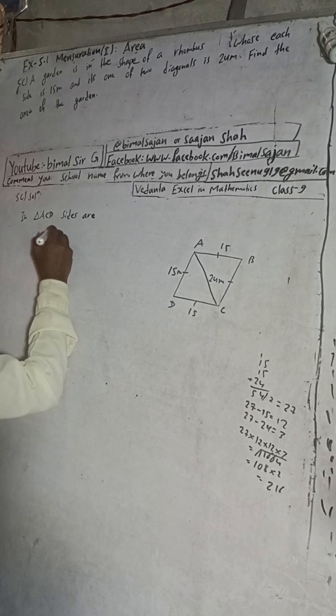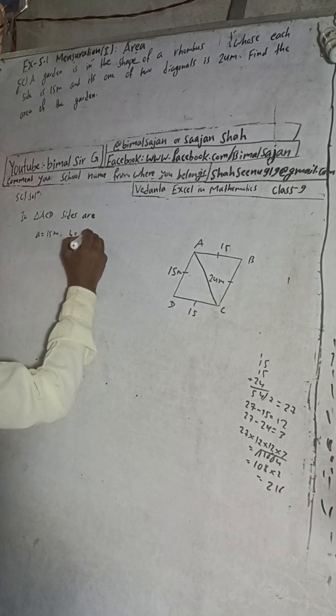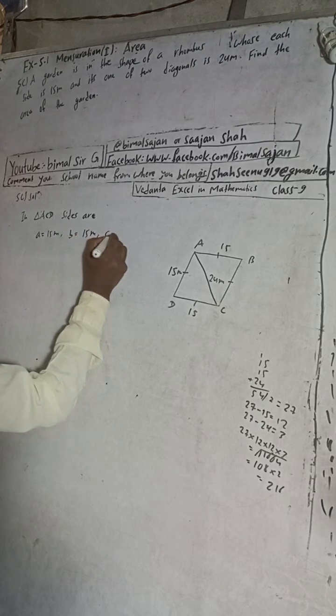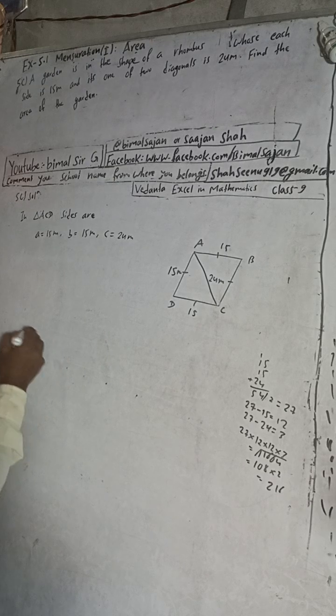a is equal to 15 meters, b is equal to also 15 meters, and c is equal to 24 meters. Now semi-perimeter s.